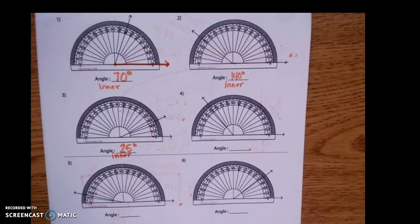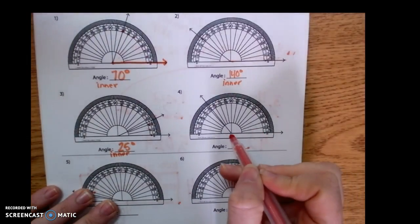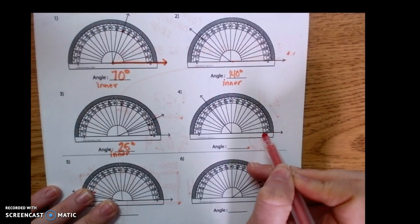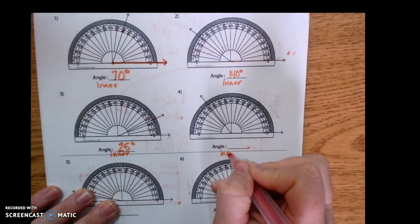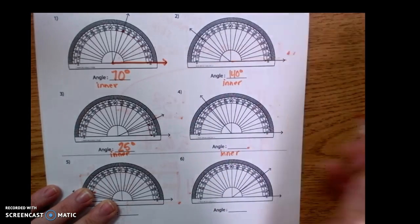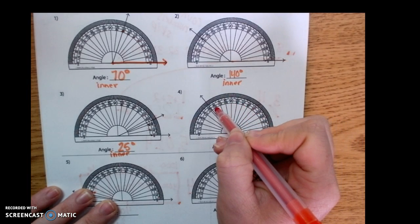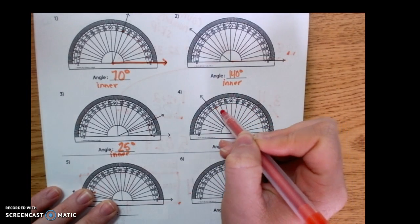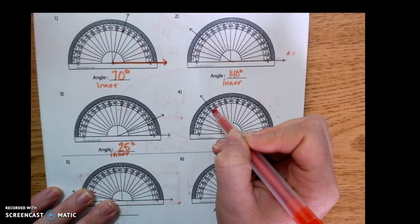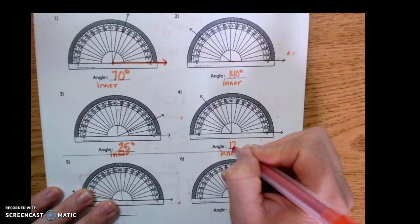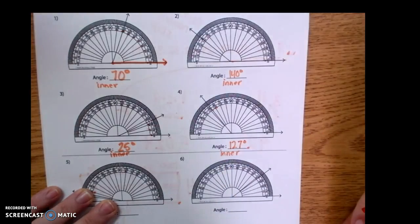For this one, number four, you'll see that the bottom ray is pointed this way. So we're going to use the inner again. And then we're counting up using the inner. Looks like it's about 120, then 125, about 126 or 27. So I'm going to put 127 degrees.